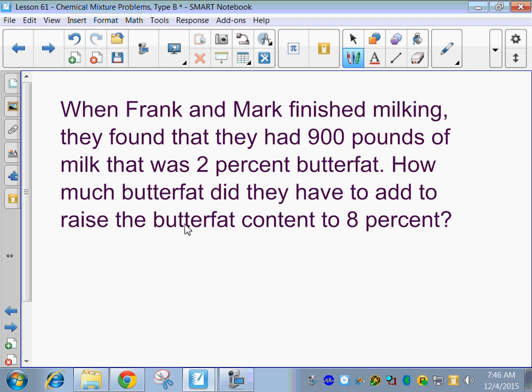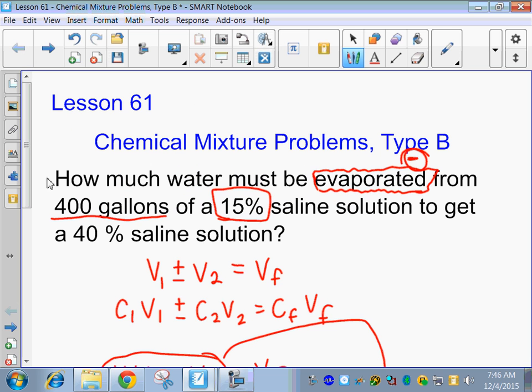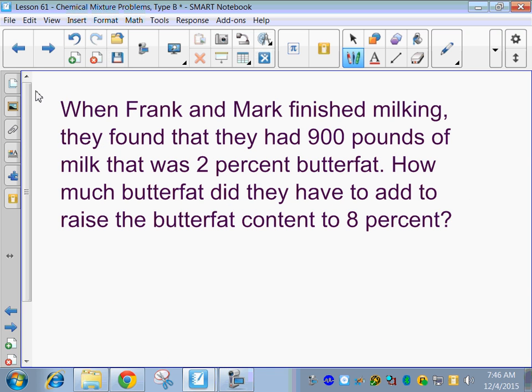So we've got our formulas. The first one is just volume. So if we look back here, we're going to start with this formula right here with our volumes. So in this case, we have 900 pounds of milk. And then are we adding or subtracting in this problem? Yeah, it says how much butterfat did they have to add? So we're going to add some amount of butterfat, and we're going to get our final volume of butterfat after we add to it.